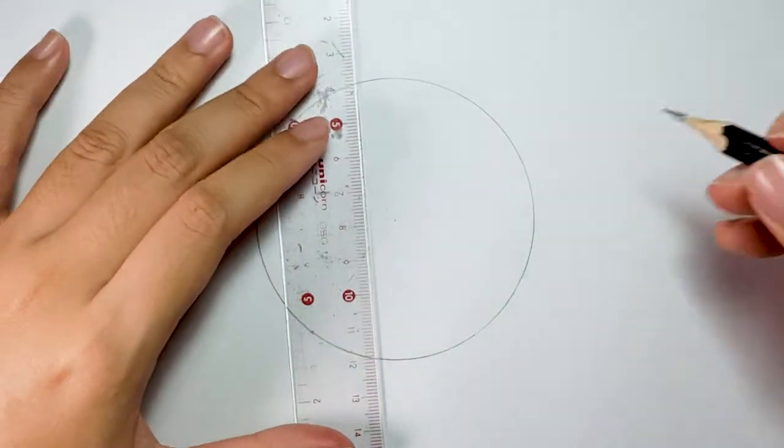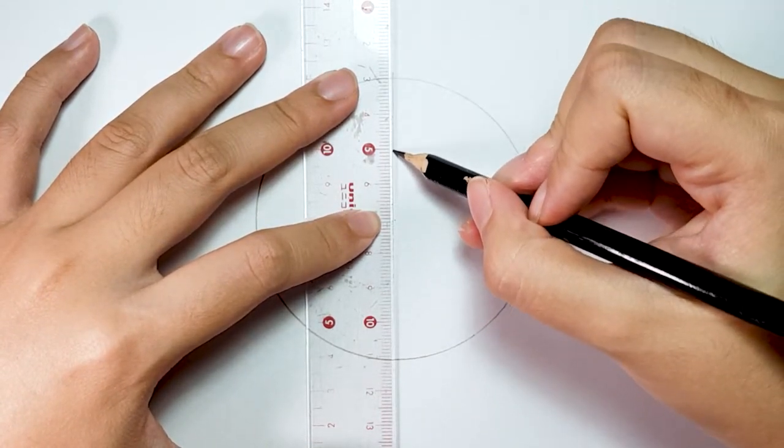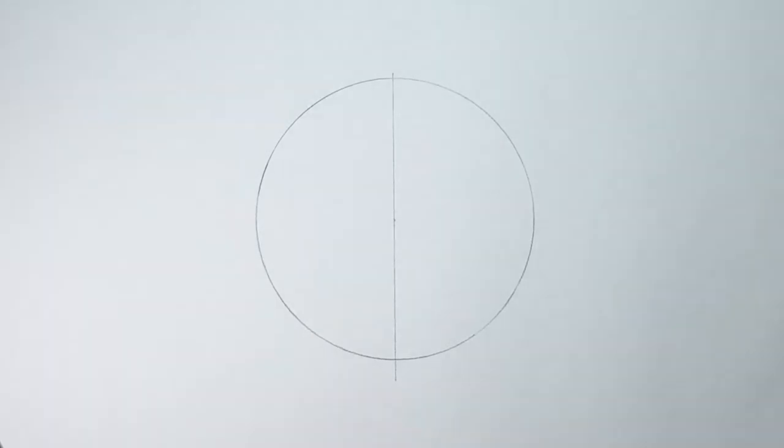Next, draw a diameter line with your ruler at the center of the circle. Label these points as point A, O, and B.